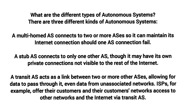What are the different types of autonomous systems? There are three kinds. A multi-home AS connects to two or more ASes so it can maintain its internet connection should one AS connection fail. A stub AS connects to only one other AS, though it may have its own private connections. A transit AS acts as a link between two or more other ASes, allowing data to pass through it, even from unassociated networks.